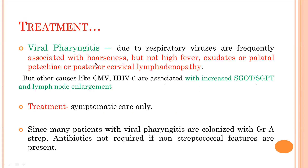In viral pharyngitis, usually no antibiotic is required. Viral pharyngitis due to respiratory viruses is frequently associated with hoarseness and is not associated with high fever. There is no exudate, no palatal petechiae, and no posterior cervical lymphadenopathy. However, causes like cytomegalovirus and herpes simplex virus can be associated with elevated liver enzymes (SGOT/SGPT), lymphadenopathy, and atypical lymphocytes. Since many patients with viral pharyngitis are colonised with group A Streptococcus, antibiotics are not required if non-streptococcal features are present.